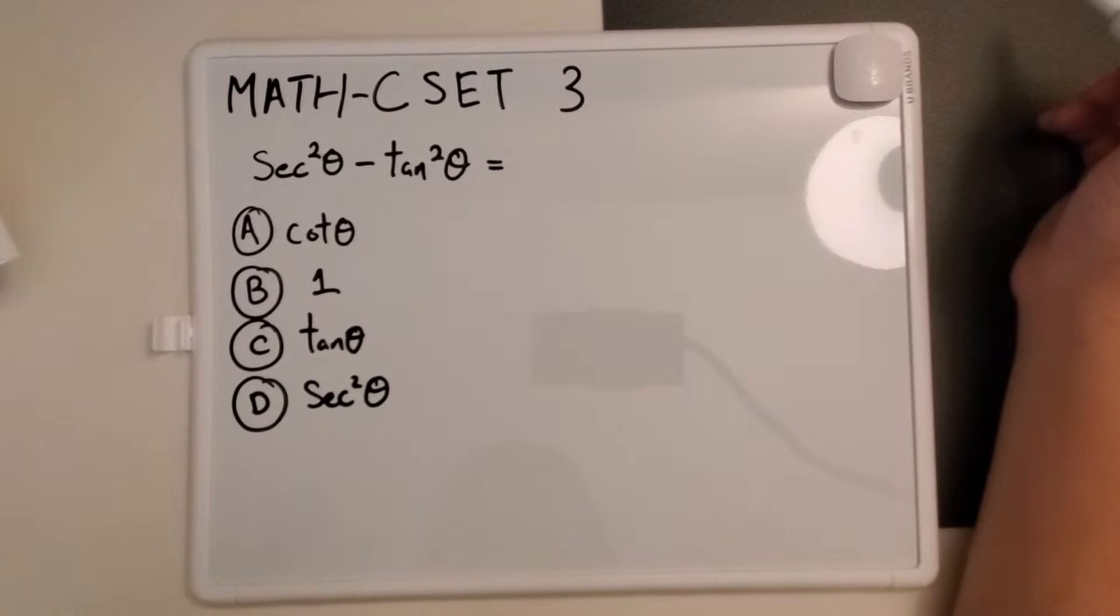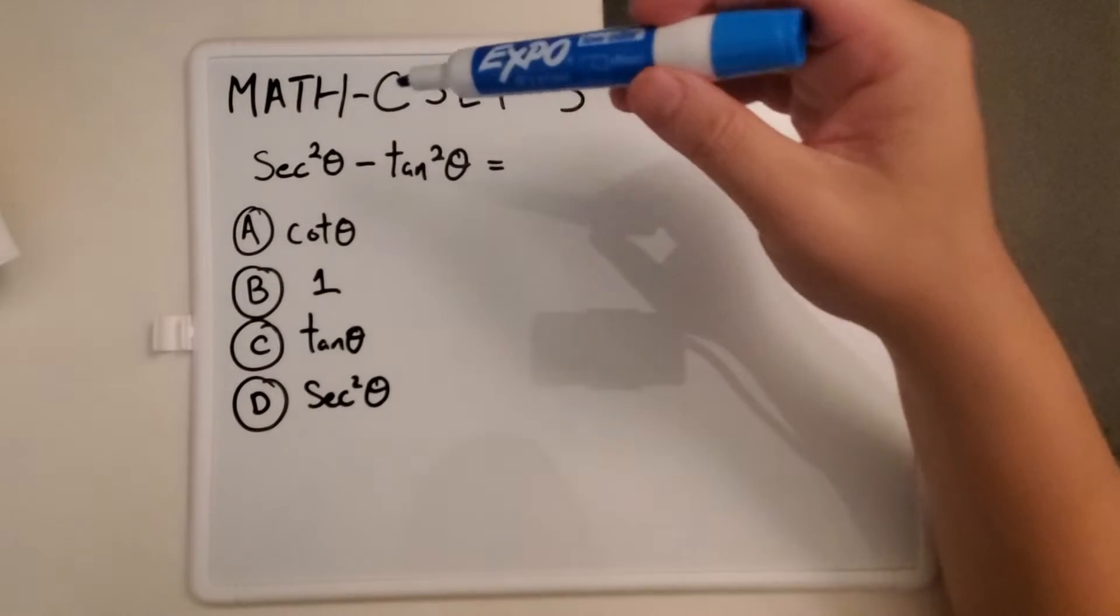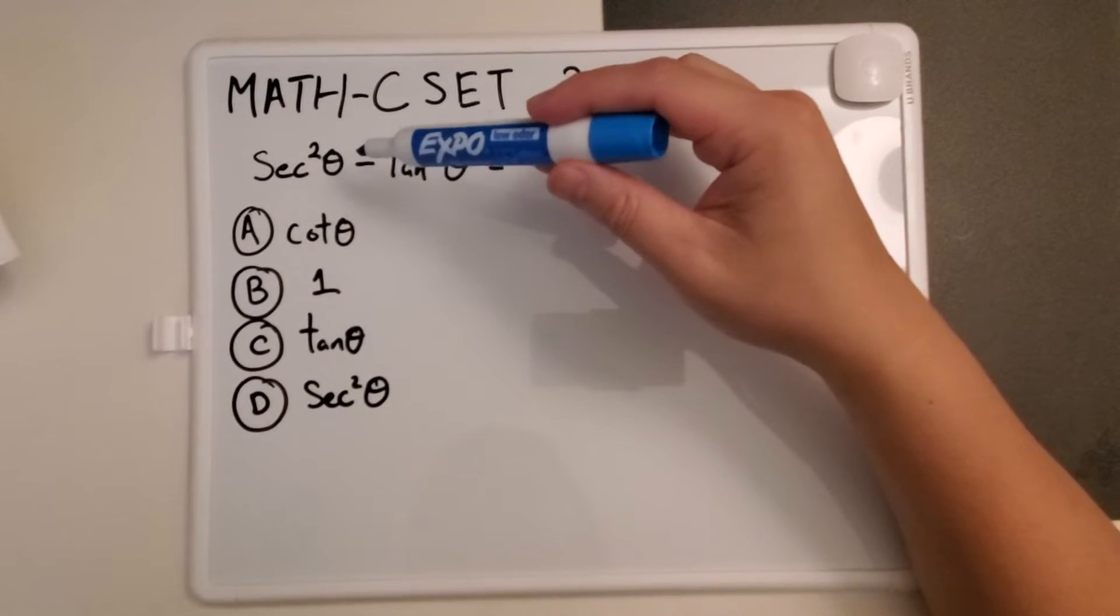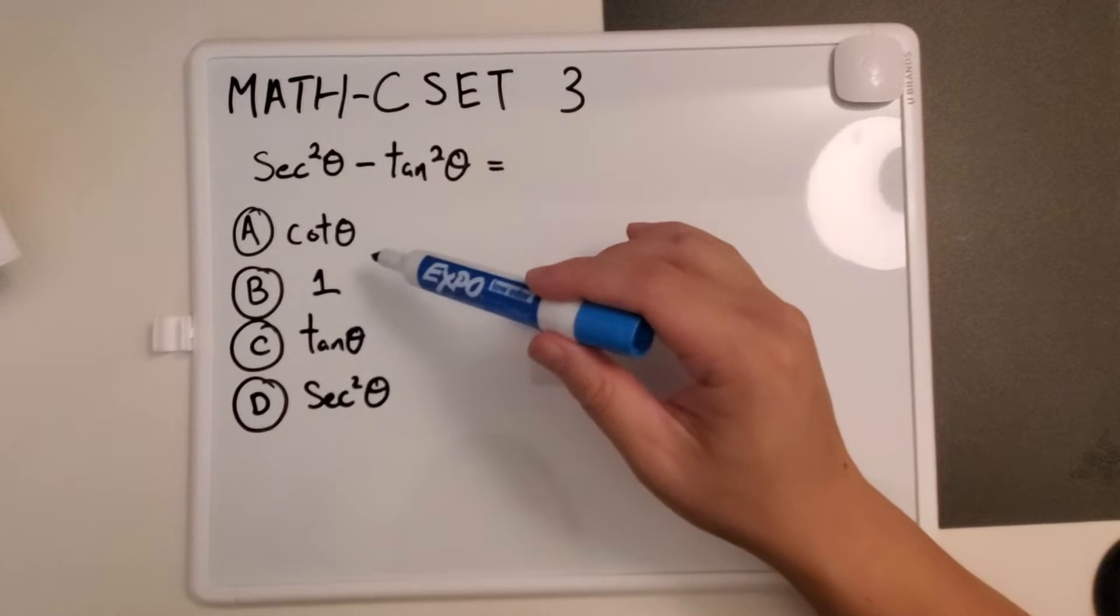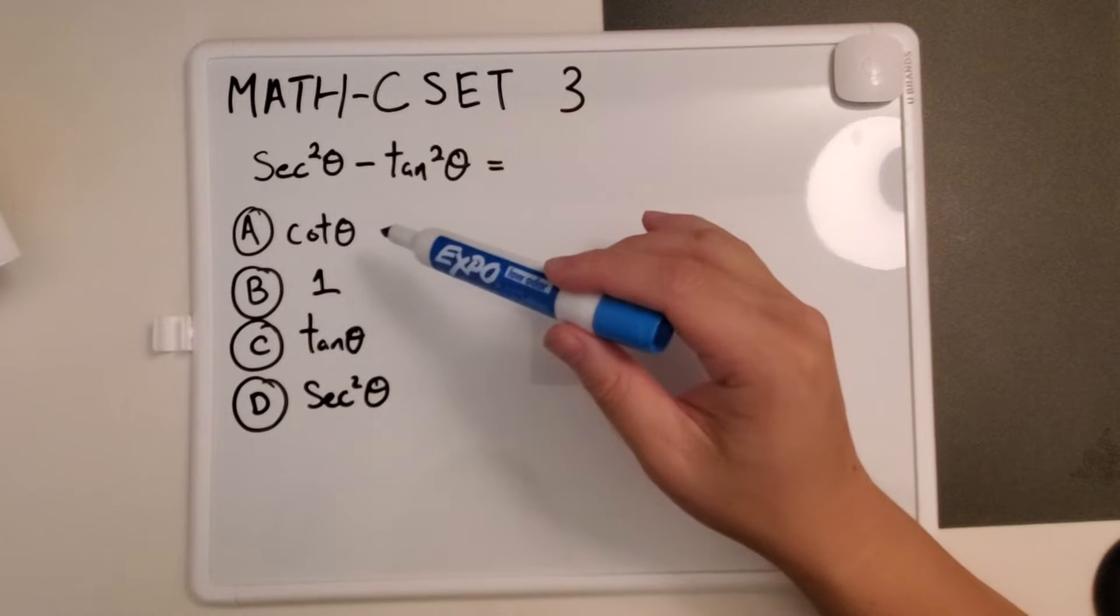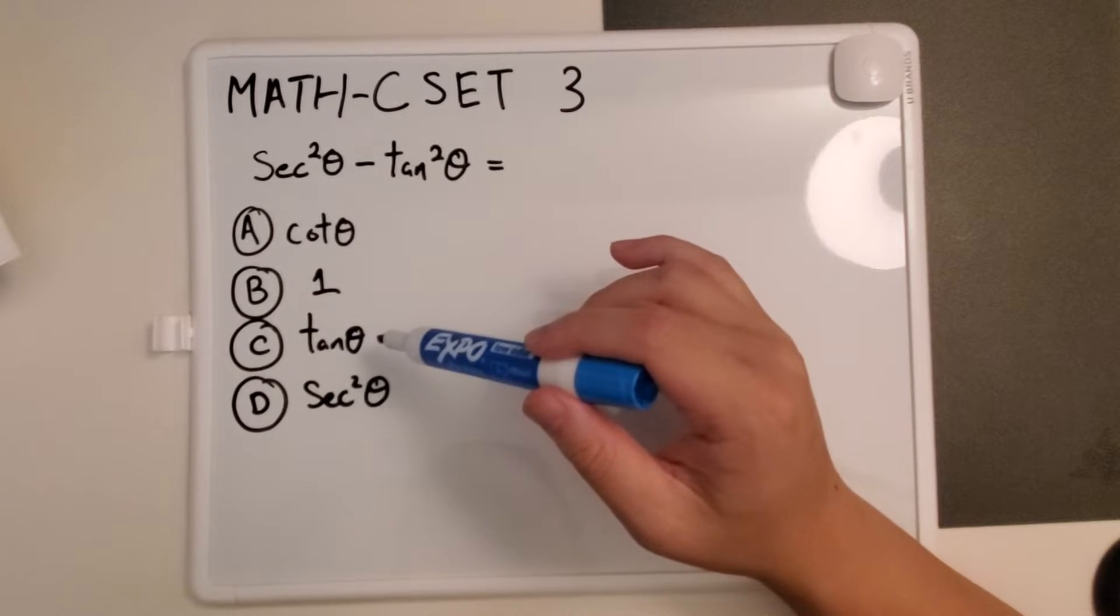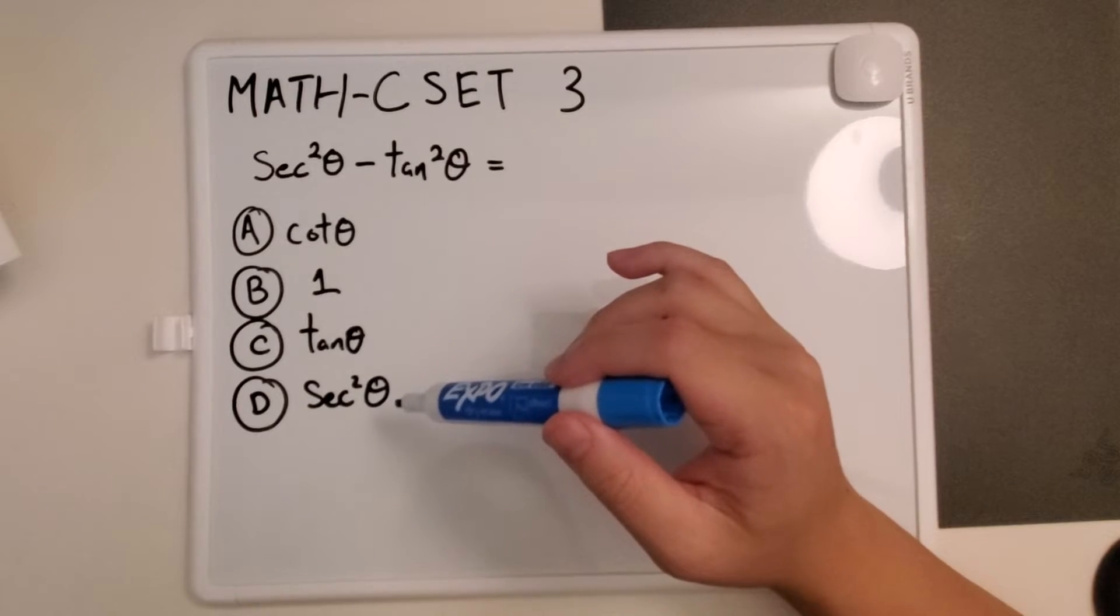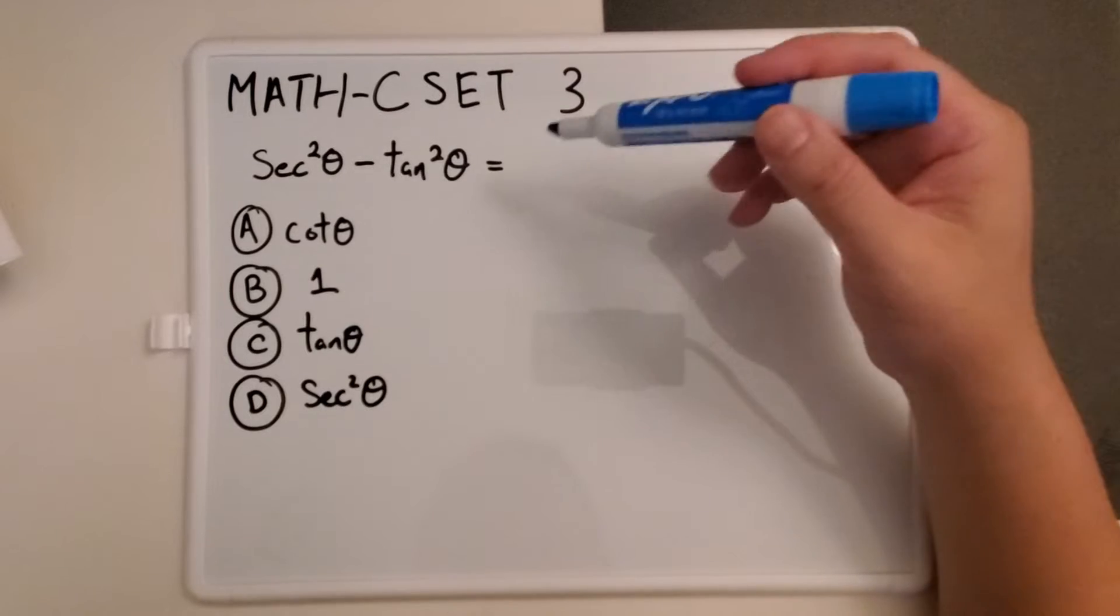Welcome back everyone. So today we're going to talk about how to simplify some trig identities. In this problem, we're asked to simplify secant squared theta minus tan squared theta. Here are our choices: A is cotangent theta, B is 1, C is tangent theta, and D is secant squared theta.